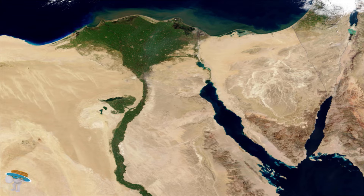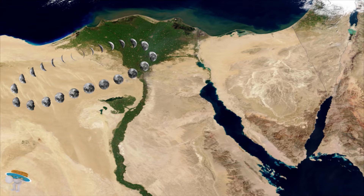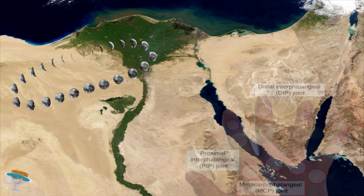The exact reason for the ancient Egyptians' use of the base-12 system isn't known, but there are several theories. Some believe it was based on the 12 lunar cycles in a year, while others believe it's based on the 12 joints in your fingers on one hand when you exclude the thumb. With the joint method you can actually count to 24 by using both hands.